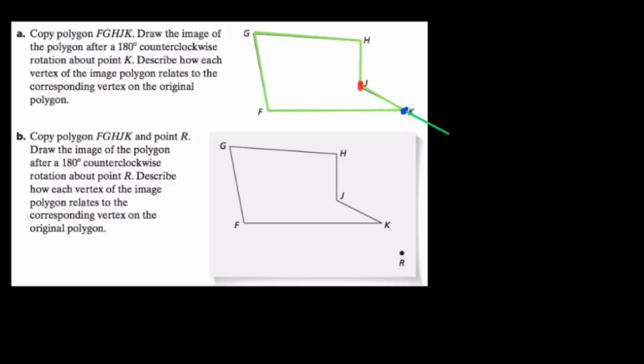So there we have J prime. And notice what's interesting is that they're right across from each other, and the distance from J to K and J prime to K are equal, and if I'm going to measure the angle right here, this is 180 degrees.